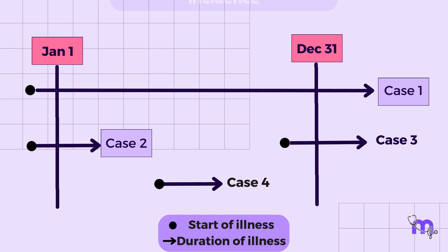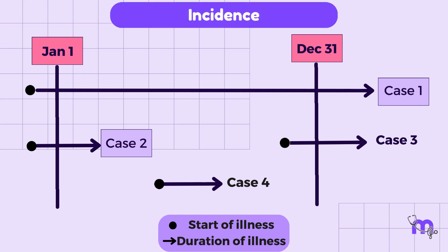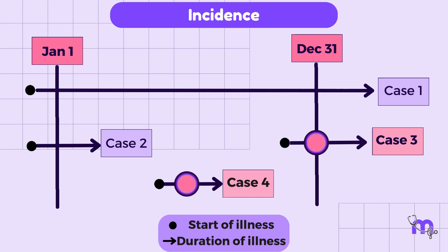Lastly, incidence — the occurrence of new cases between January 1st and December 31st — is equal to 2, as case 3 and case 4 are the only new cases that have occurred after January 1st.